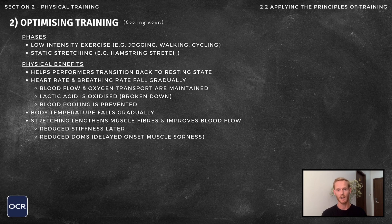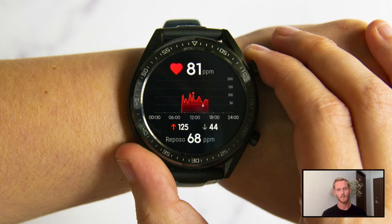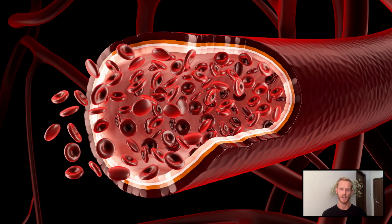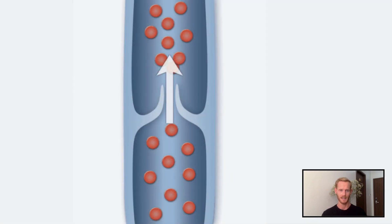An effective cool-down consists of two phases, beginning with a period of low-intensity exercise like jogging, walking, or cycling, where pace is reduced gradually throughout. This helps the body transition back to its resting state and allows heart rate and breathing rate to fall gradually. This ensures that blood flow and oxygen delivery are maintained for some time, which allows lactic acid to be oxidized and removed, and prevents blood pooling in the veins. If blood pressure falls too rapidly after exercise, blood may collect above the pocket valves, but by maintaining blood flow this issue is avoided.